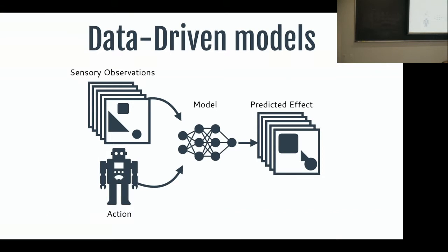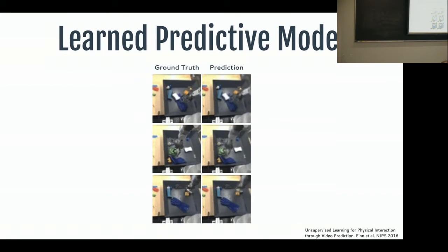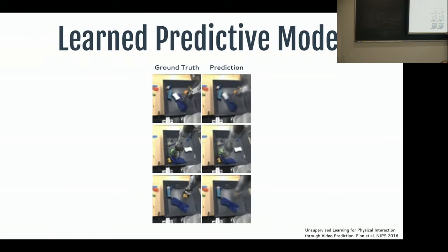What people have done is replace the physics-based model with a deep neural network, going from sensory observation and action directly to the effect in observation space. For example, a robot pushes objects around in a gray box; the model predicts what will happen next — the prediction is roughly right but blurry. However, this only works for that specific viewpoint, robot, and gray box. The question of generalization is critical.